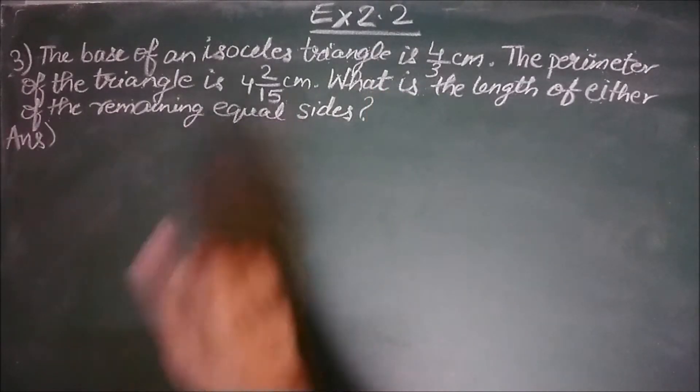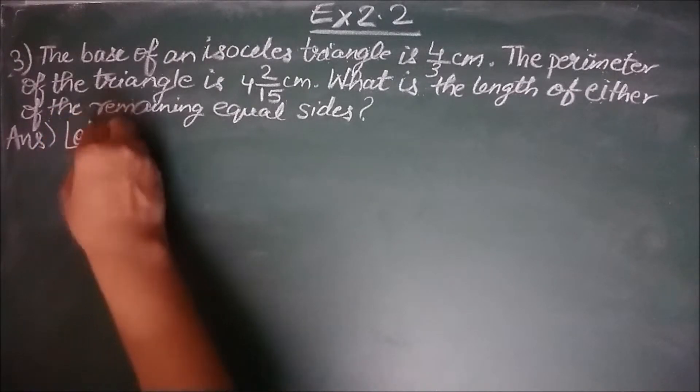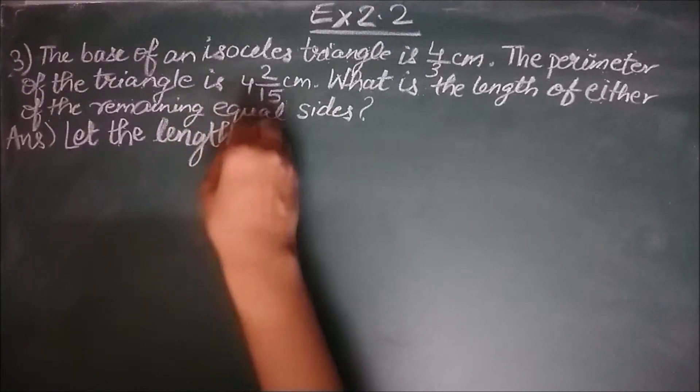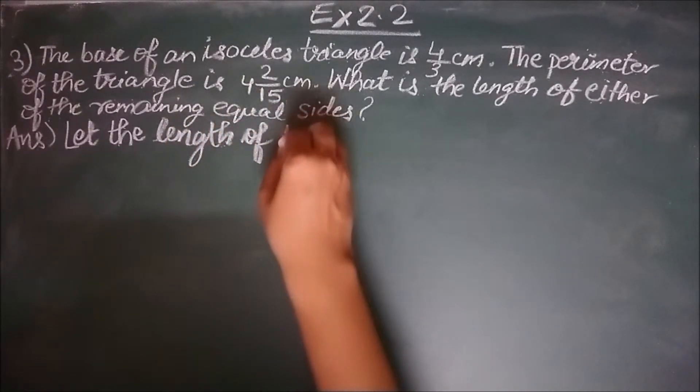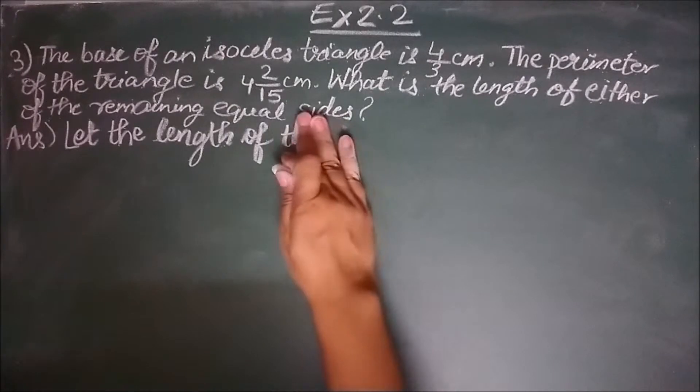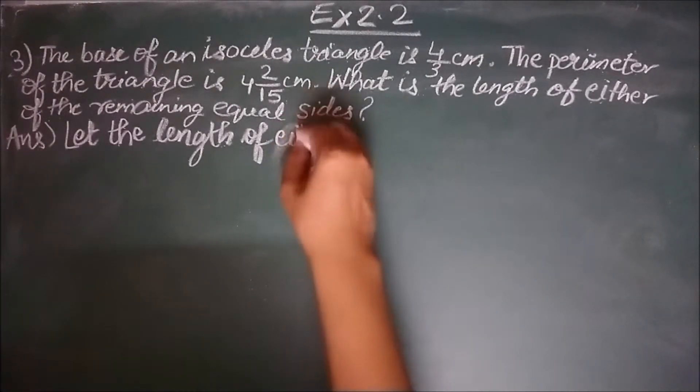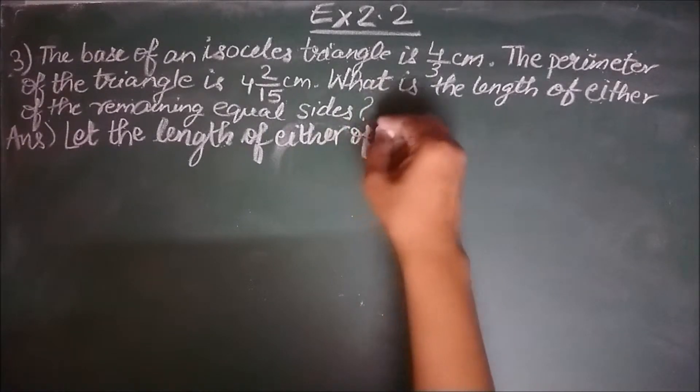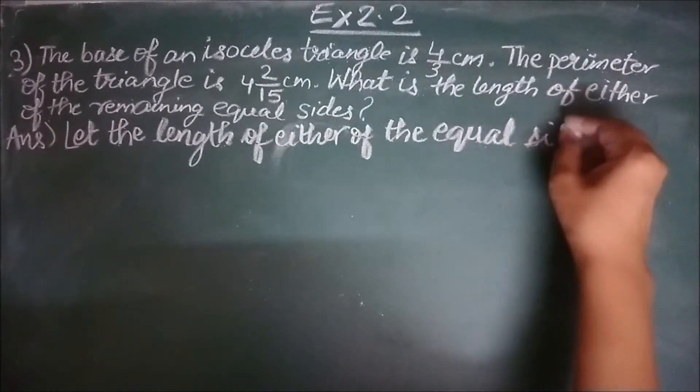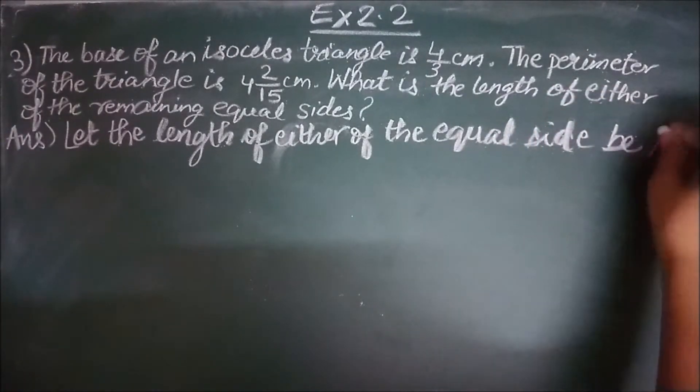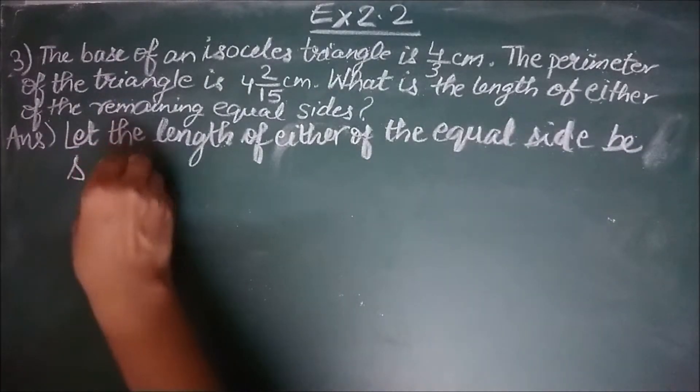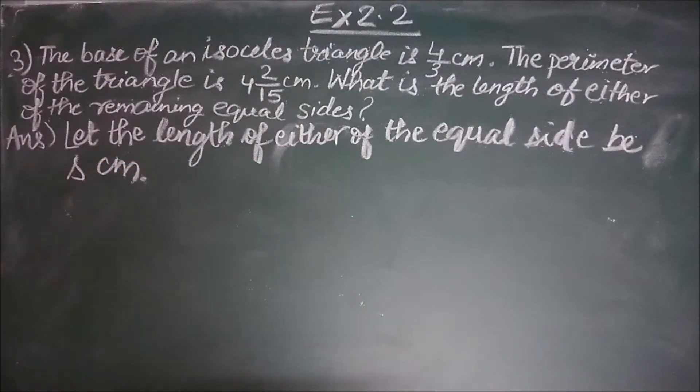Going by using the last statement, what is the length of either of the remaining equal sides? So let the length of the equal side, either of the equal side, be S. S cm. S I have used as a part of my convention, because I am talking about sides so I am using the first letter of the word side.